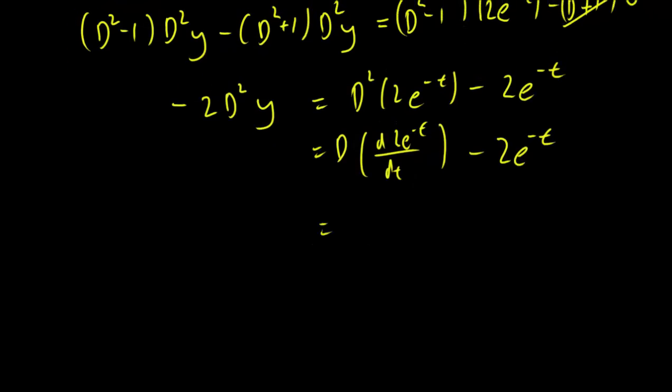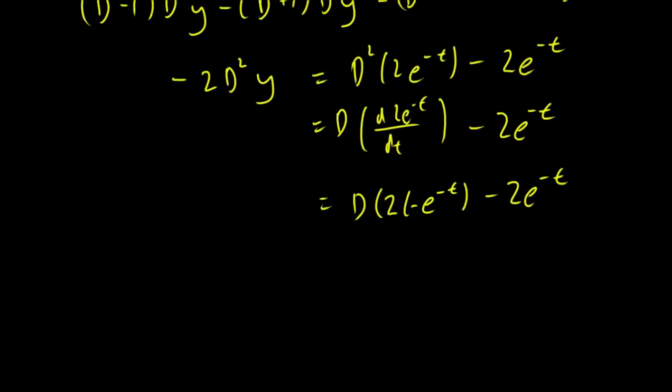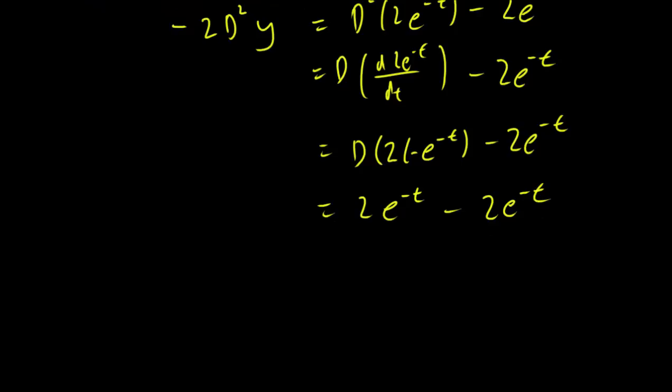That derivative is just going to be D times 2 minus e^(-t) minus 2e^(-t). And that gets you 0.